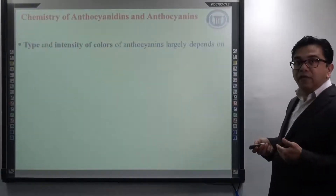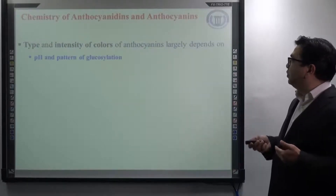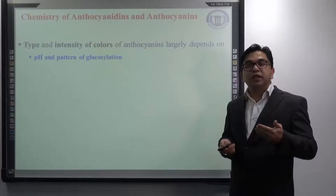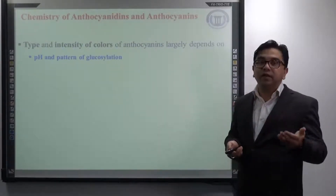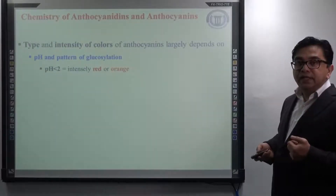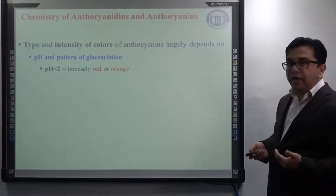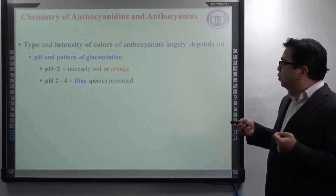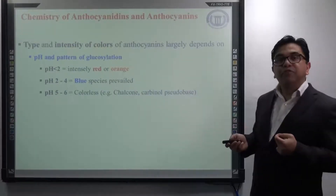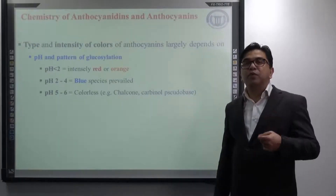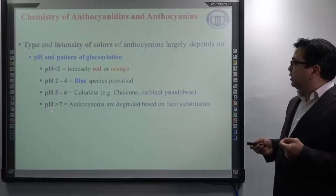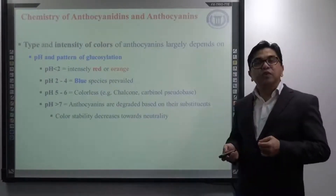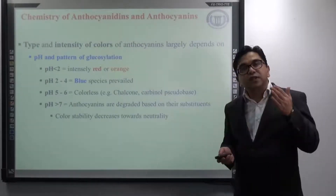The second important factor on which the type and intensity of colour of anthocyanins largely depend is pH and the pattern of glycosylation. At different pH values, anthocyanidin and anthocyanin show different colourations. For example, when pH is less than 2, it shows intensely red or orange colour. At pH 2 to 4, blue colour species prevail. At pH 5 to 6, colourless anthocyanins are found to be more predominant. If the pH is more than 7, anthocyanins tend to degrade based on their substituents. Colour stability decreases towards neutrality, meaning towards pH 7.